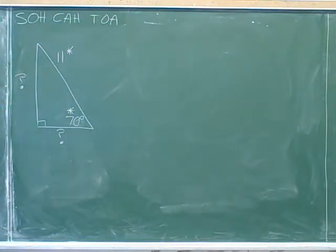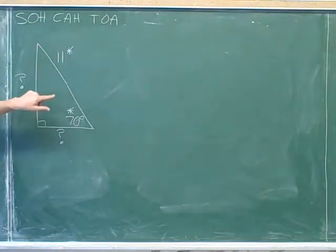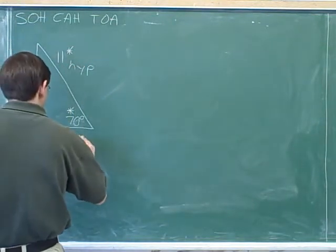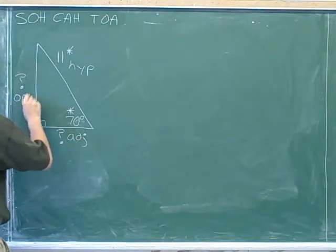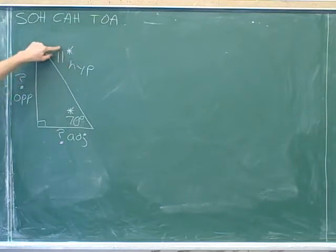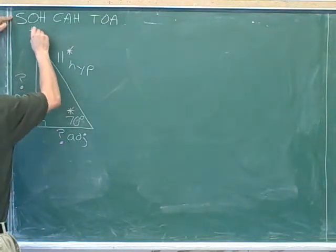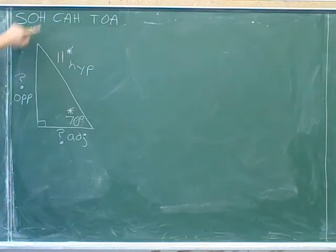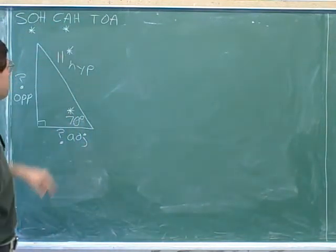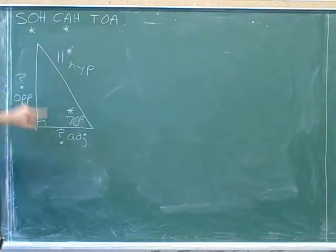Which trig functions are we going to use? This asterisk is reminding us that we're going to want to use the number 11, which represents the hypotenuse. Let's go ahead and label the adjacent side and the opposite side as well. We're going to want to use trig functions that refer to the hypotenuse, because that's the number that we know. The sine is a good candidate because it refers to the hypotenuse, and the cosine is a good candidate because it refers to the hypotenuse. But the tangent doesn't refer to the hypotenuse, so it would be futile to use it here.